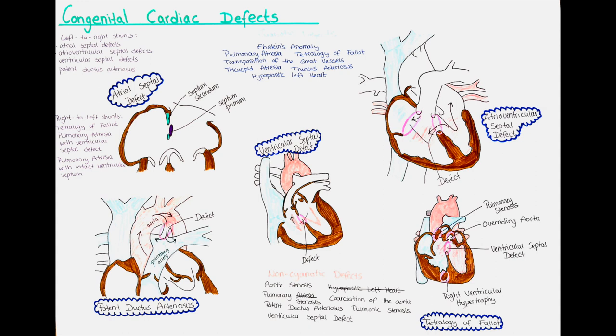Congenital heart diseases are the most common group of birth defects and cause more deaths during the first year of life than any other birth defect, affecting around 8 out of 100 babies. Generally, they are grouped into two major groups: the cyanotic type, where less oxygen is in the tissues leading to a bluish discoloration of the skin, and the non-cyanotic type. The severity can range from being an immediate danger to the baby's life to being undetected for many years or decades.